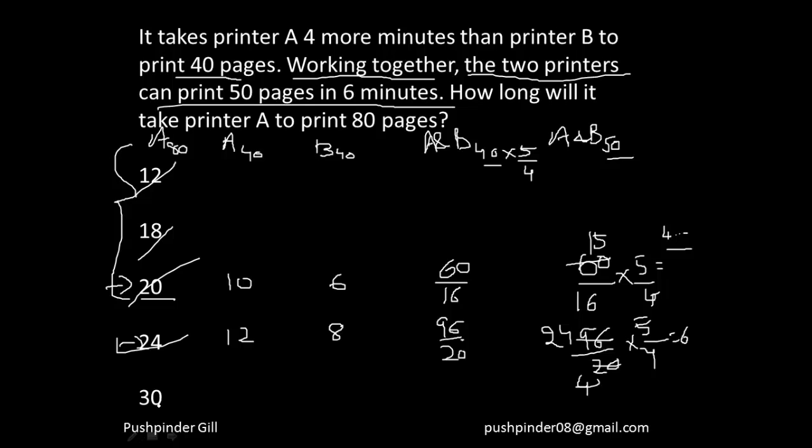Let me take a quick recap. It takes printer A four more minutes than printer B to print 40 pages. The question asks how long will it take for printer A to print 80 pages. I start with option C. Let us assume it takes 20 minutes to print 80 pages. It will take 10 minutes to print 40 pages and B is going to take 4 less minutes. From this, I got that together they are going to take 60 by 16 minutes to print 40 pages. To print 50 pages, 5 by 4 into that. I get 4 something.